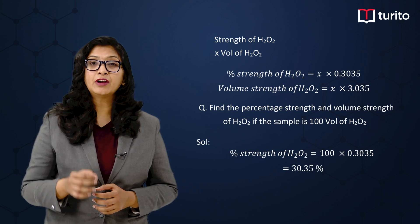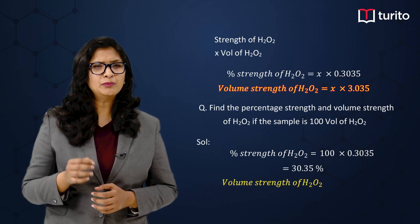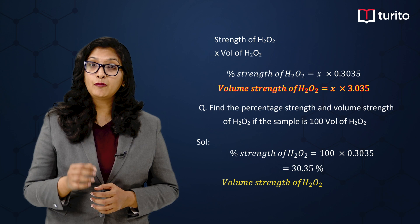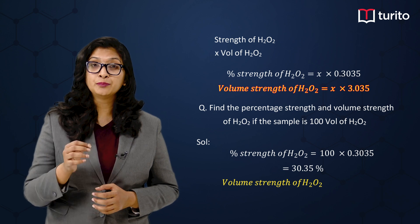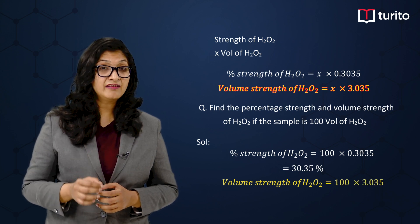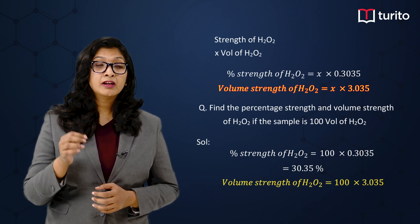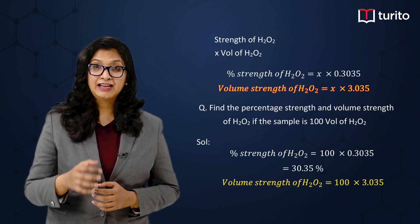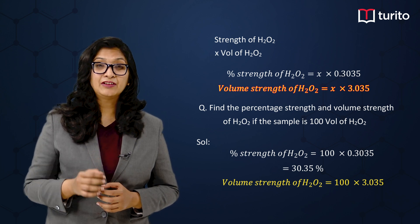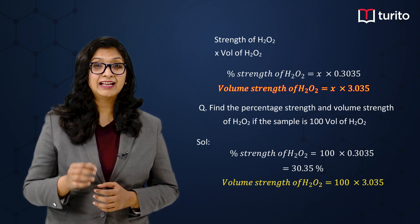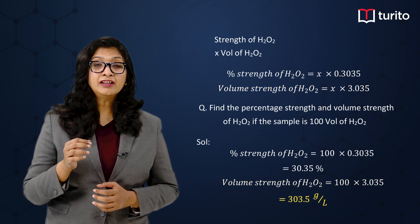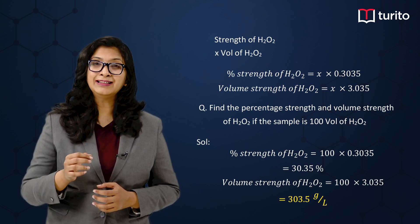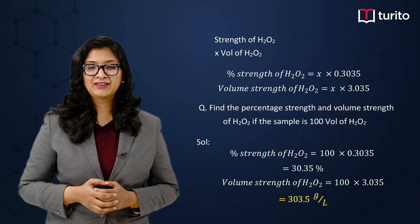Now, if I have to find out the volume strength of H₂O₂, then what I have to do? I have to multiply this 100 with 3.035 and finally I will get the answer as 303.5 grams per liter.